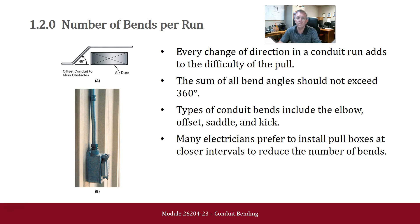Number of Bends per Run. Every change of direction in a conduit adds to the difficulty of the pull. The sum of all bend angles should not exceed 360 degrees. Types of conduit bends include the Elbow, Offset, Saddle, and Kick. Many electricians prefer to install boxes at closer intervals to reduce the number of bends.